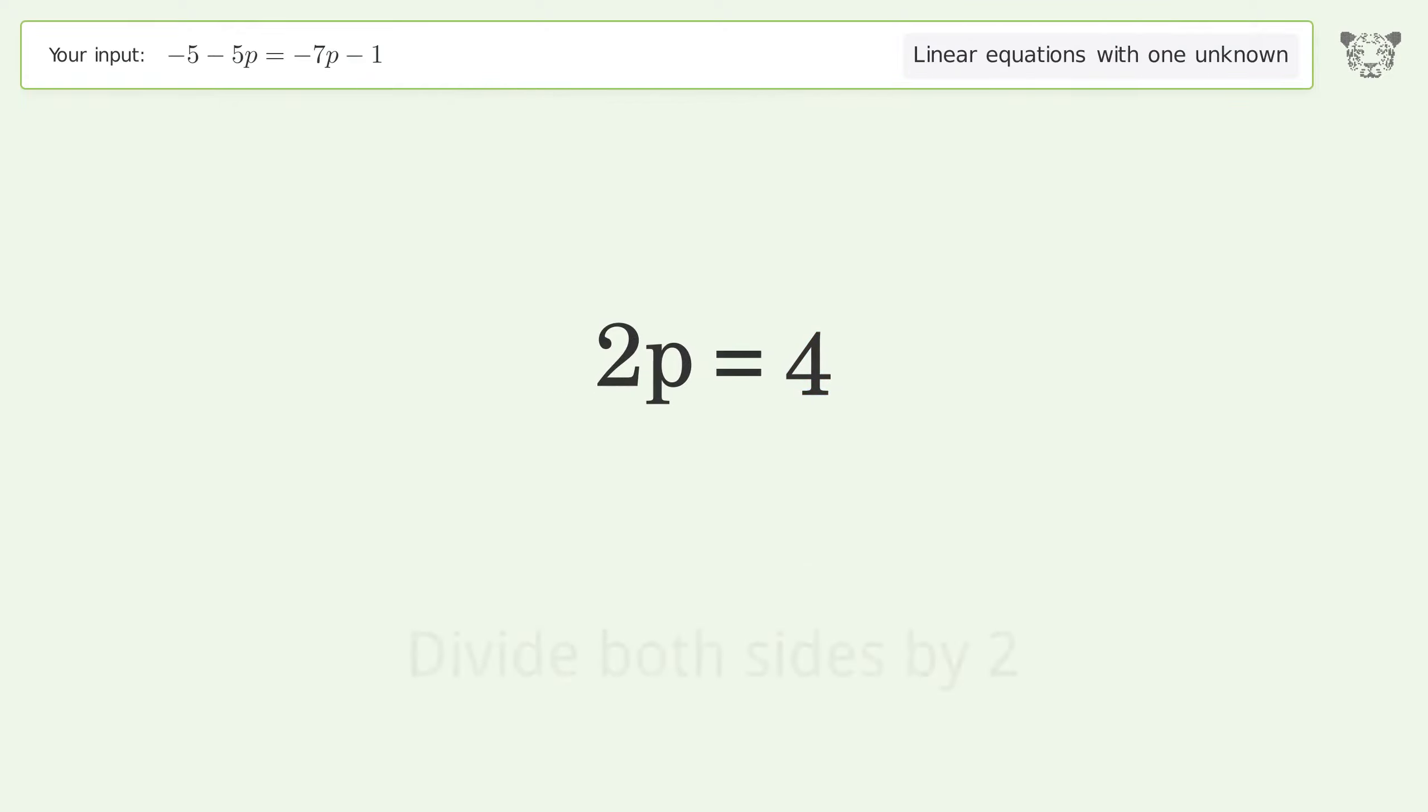Isolate the p. Divide both sides by 2. Simplify the fraction.